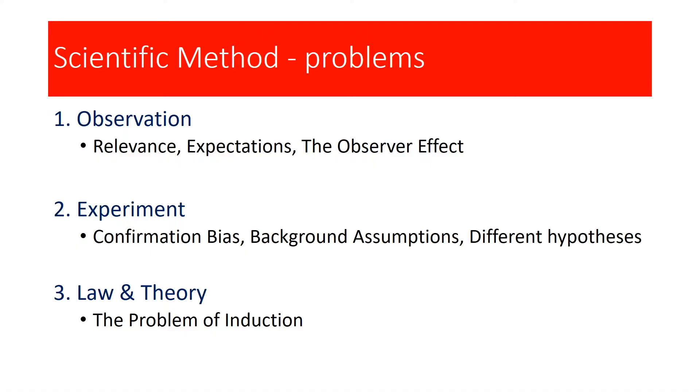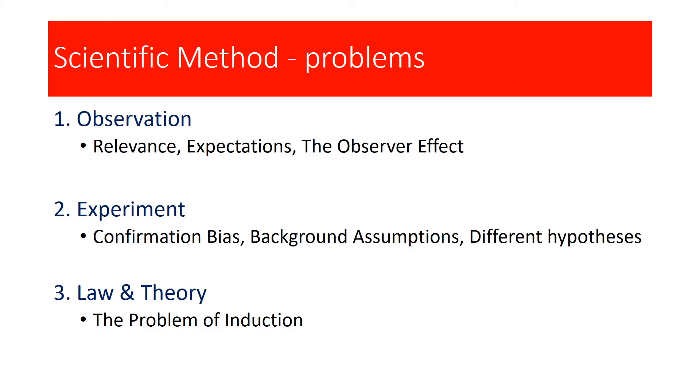With regard to the experimental stage, there are certain problems here as well, relating also to conceptual schema. You've got confirmation bias, which is the idea that we are more likely to look for and give credit to evidence that supports our existing hypothesis and not evidence that refutes it. This also links to background assumptions — what we think will happen really dictates the scientific methodology, connecting back to expectations and relevance in the observation stage.